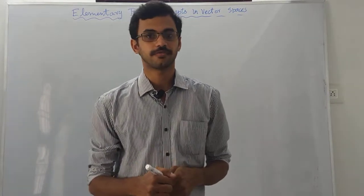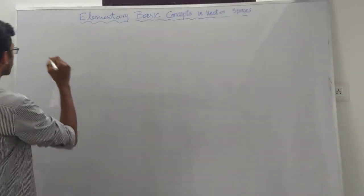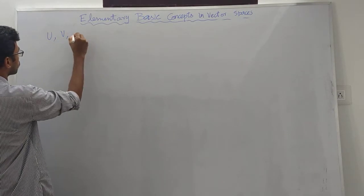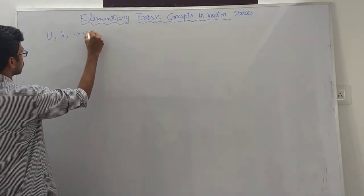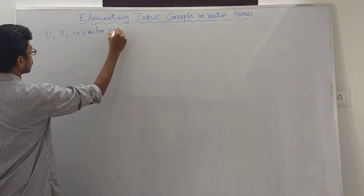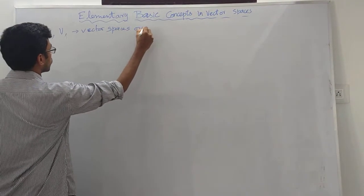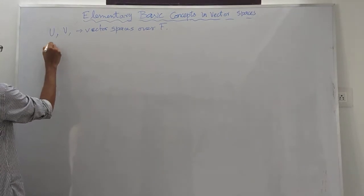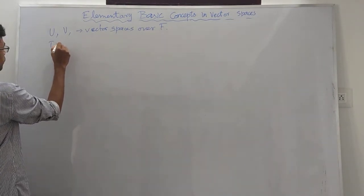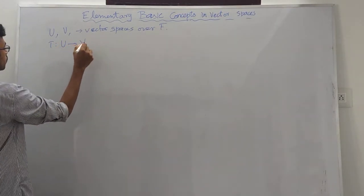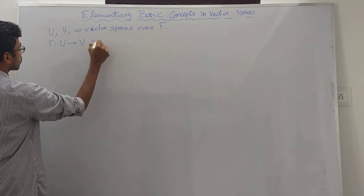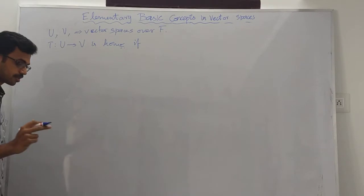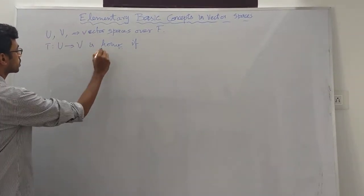We can see the vector spaces V and U — vector spaces over the same field F. Then the mapping T from U to V is a homomorphism if the inner condition is satisfied: it preserves the operations.